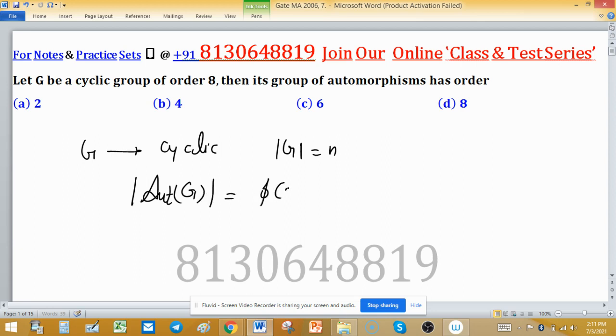For this problem, order of G is 8 and 8 can be written as 2 raised to the power 3. So the order of automorphism of G will be Phi 8, and this Phi 8 can be easily written as 2 raised to the power 3.